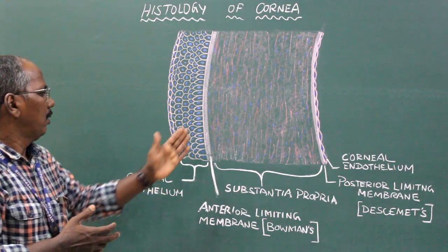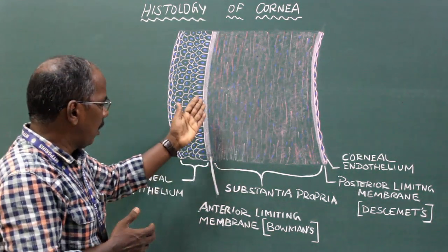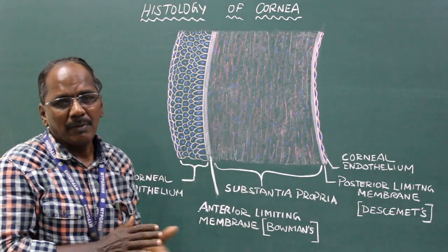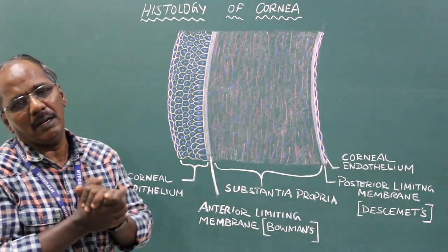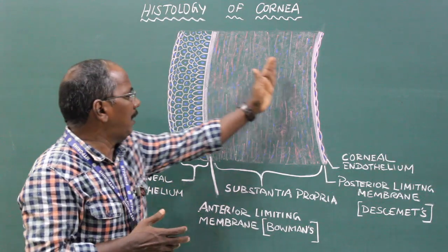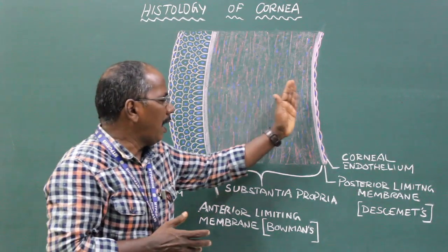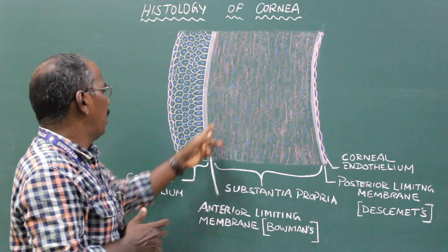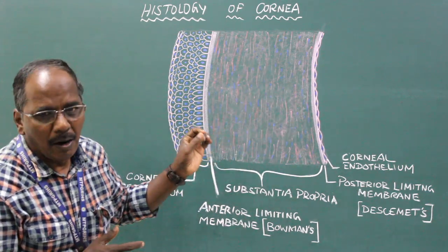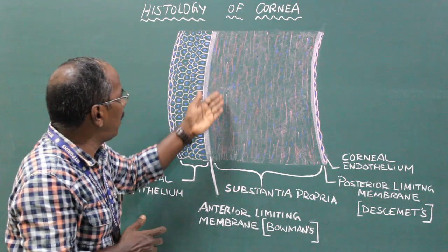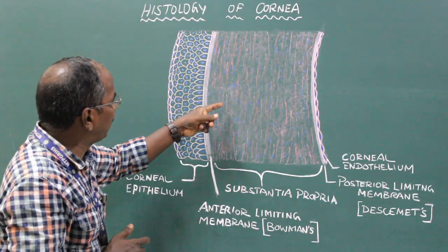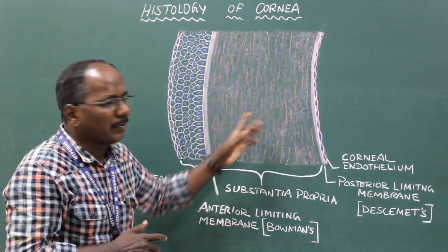The corneal stroma, or the substantia propria, forms the body of the cornea. Most of the thickness of the cornea is formed by the corneal stroma, and it is made up of bundles of collagen fibers and layers of flat fibroblasts.